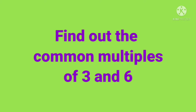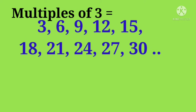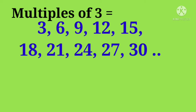Example, find out the common multiples of 3 and 6. So first let us find out the multiples of 3. They are 3, 6, 9, 12, 15, 18, 21, 24, 27, 30 and so on.